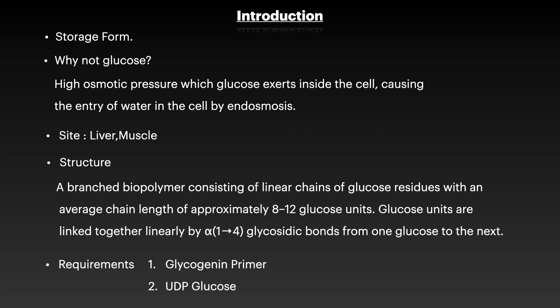Glycogenesis is simply the formation of glycogen. Glycogen is the storage form of glucose — whenever the body has an extra amount of glucose, it stores it in the form of glycogen. The body does not store it as glucose because of the high osmotic pressure property of glucose, which would lead to endosmosis and swelling.